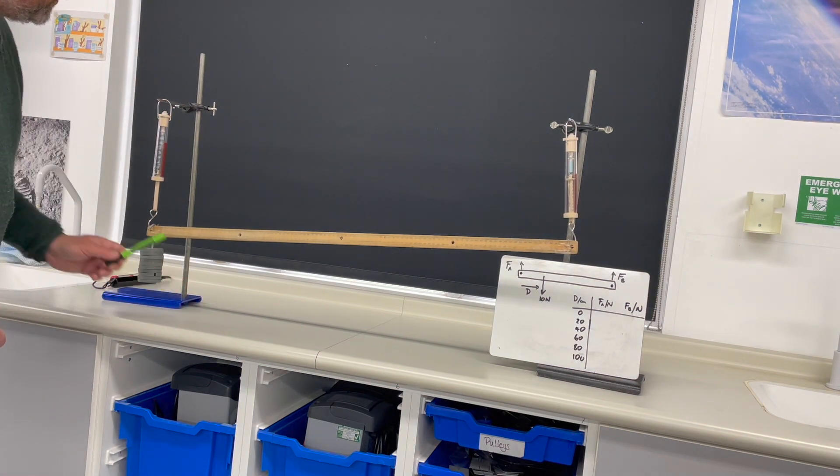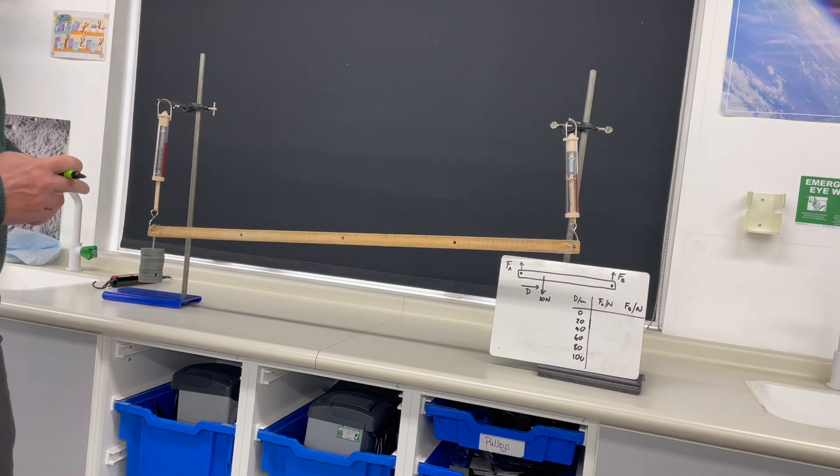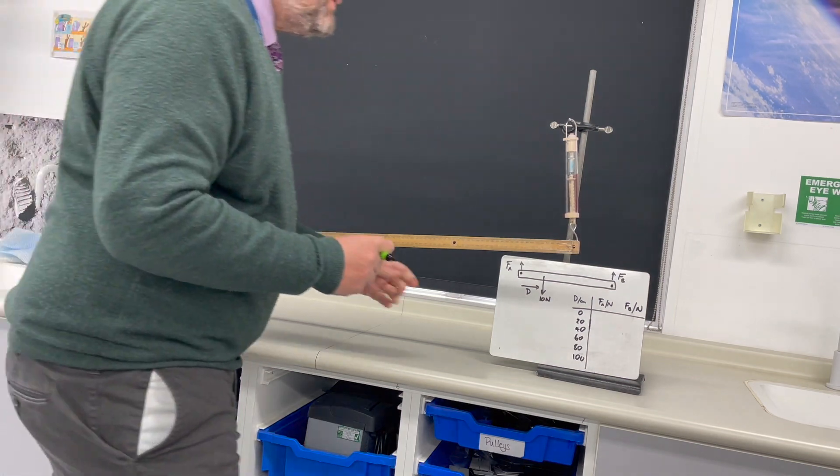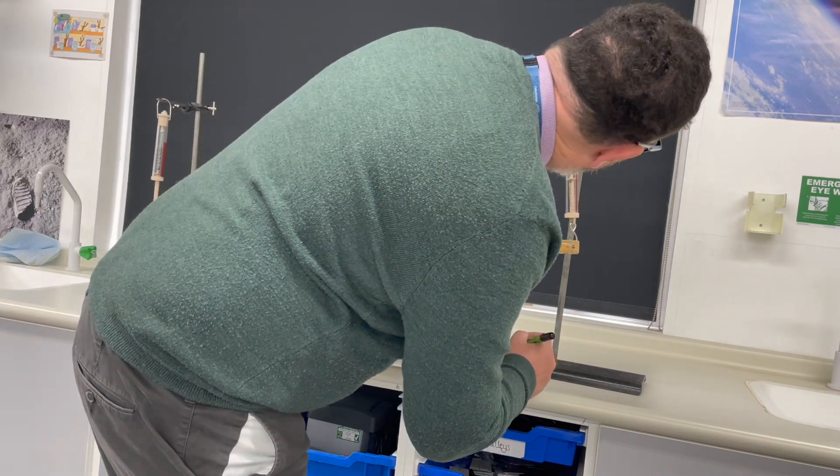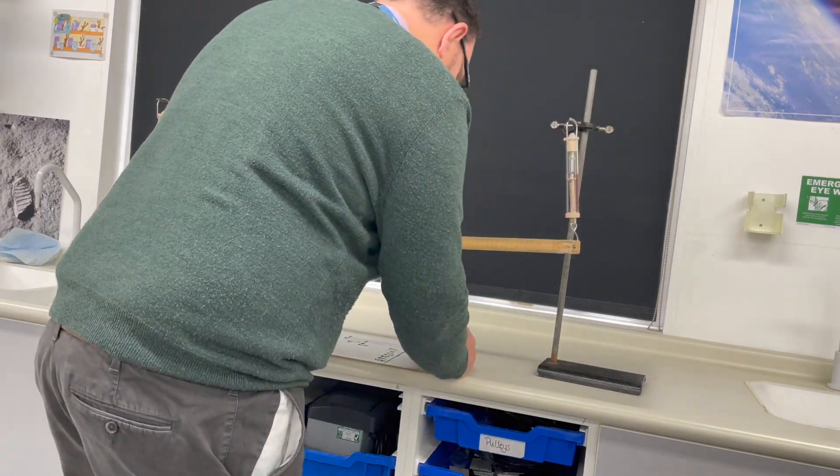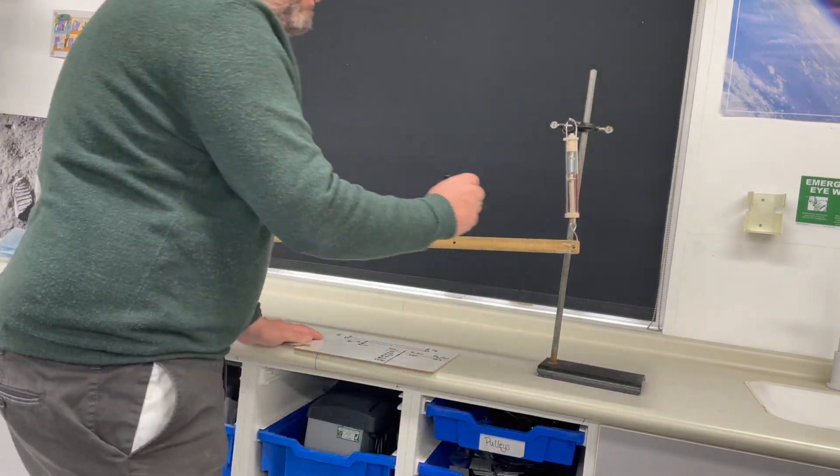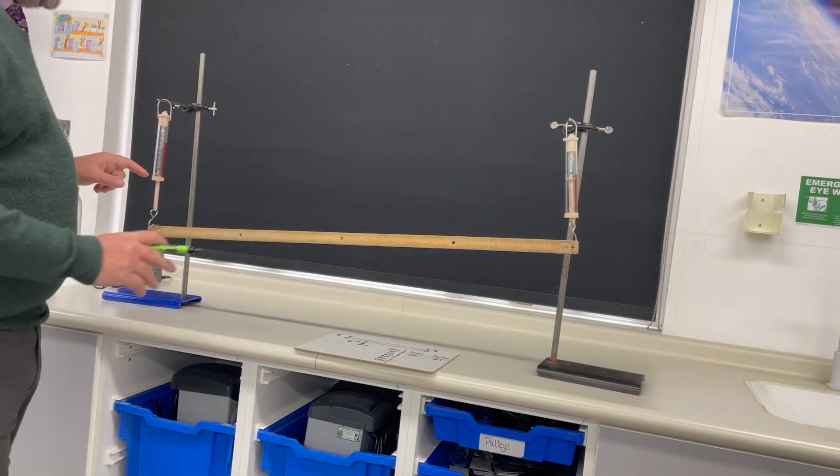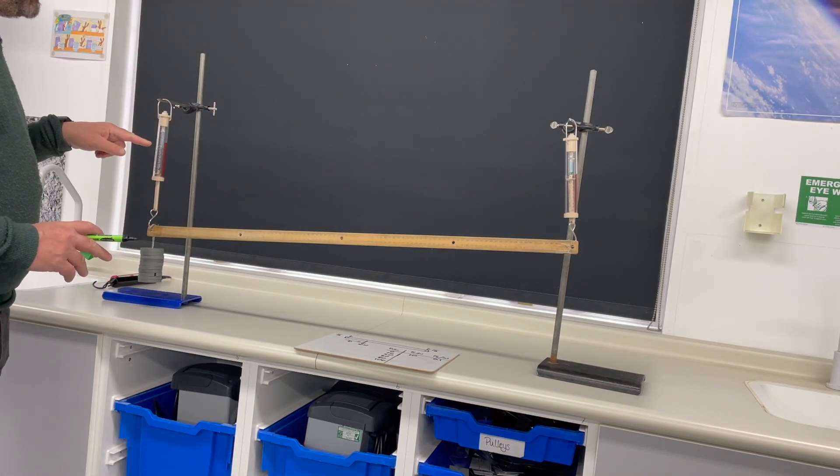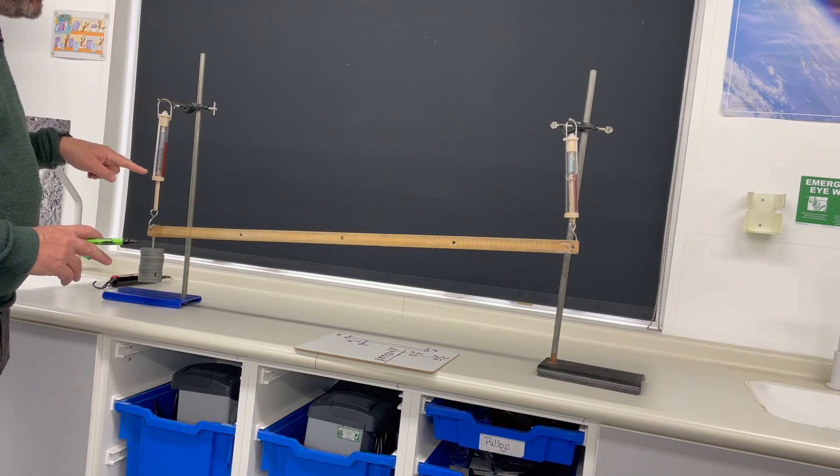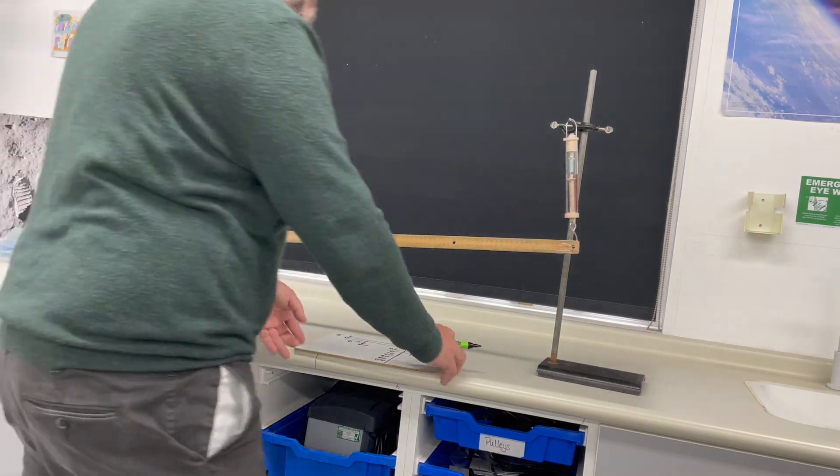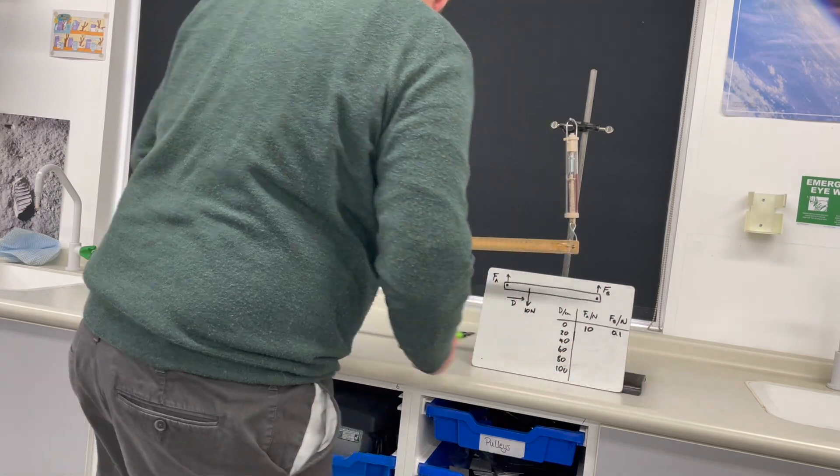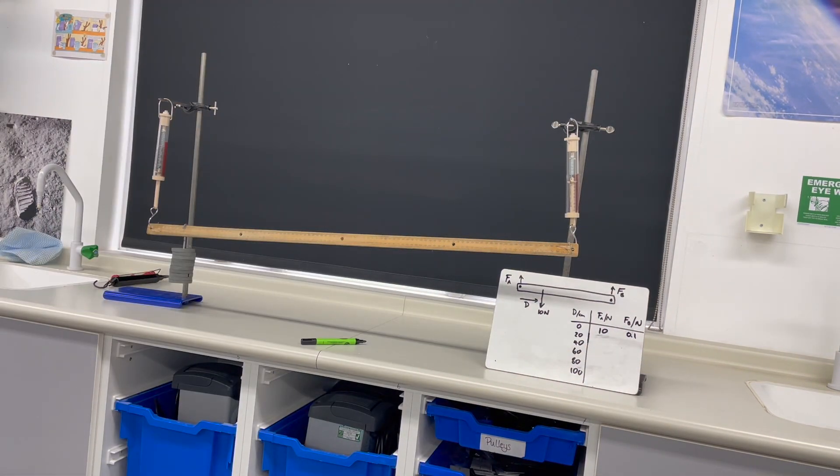The force on this Newton meter at this point is 10 newtons and this one is 0.1. Remember it's supporting the weight of the ruler, so although all of the weight is really being supported by this Newton meter at the moment, this has to support the weight of the ruler as well.